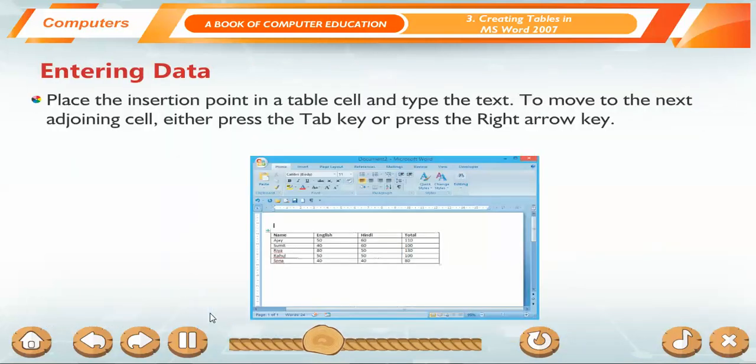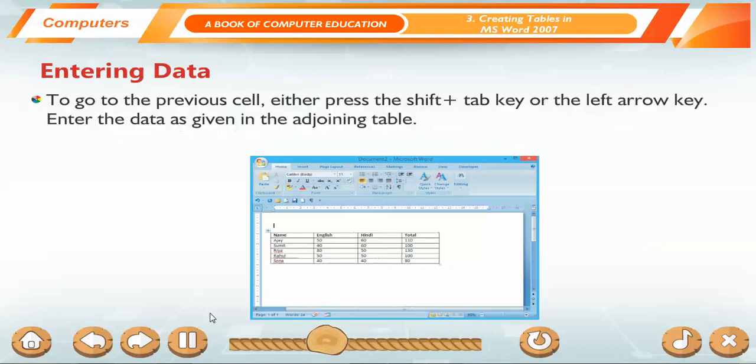Entering Data. Place the insertion point in a table cell and type the text. To move to the next adjoining cell, either press the Tab key or press the right arrow key. To go to the previous cell, either press the Shift plus Tab key or the left arrow key. Enter the data as given in the adjoining table.